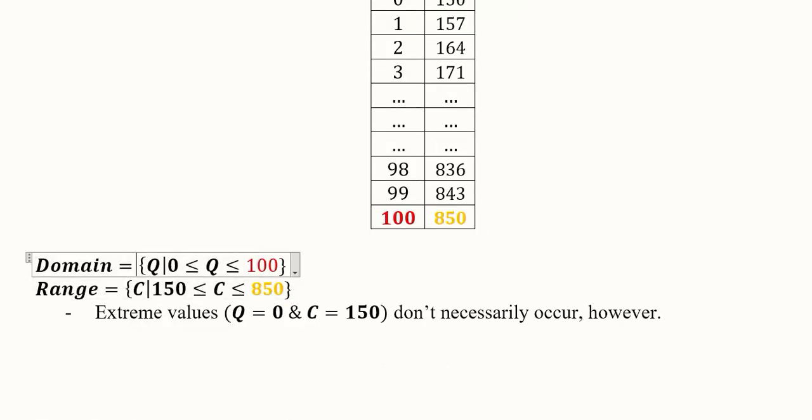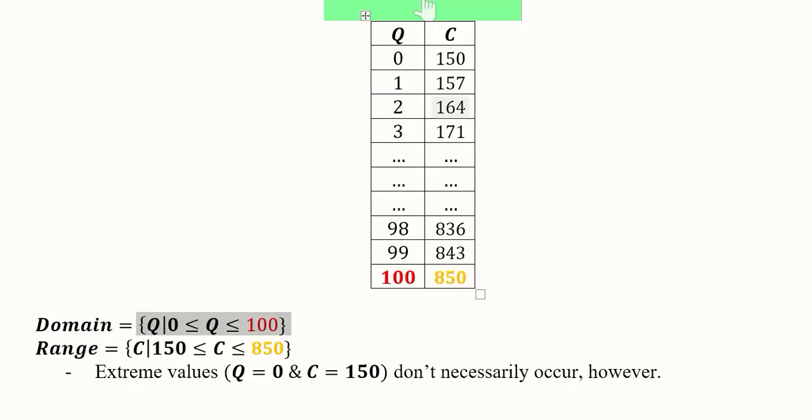And we can write this in set notation in the description method. As you can see, Q can range from 0 to 100. Consequently, C can range from 150 to 850, as we can see from this table that we developed.